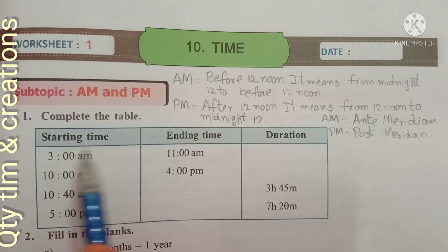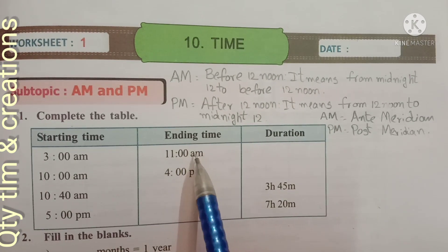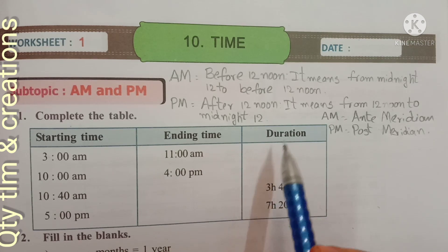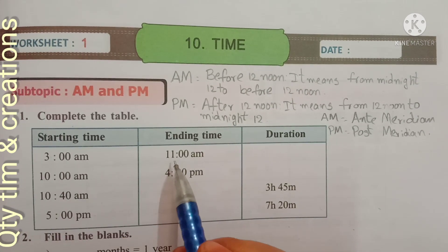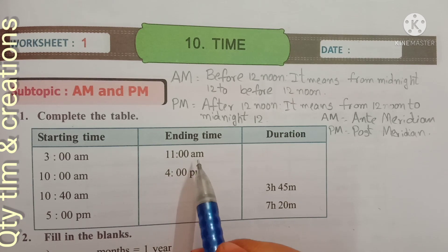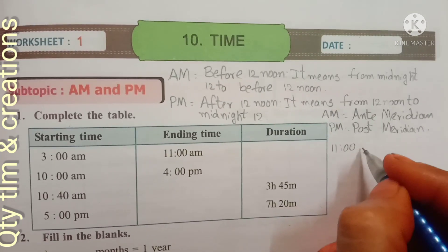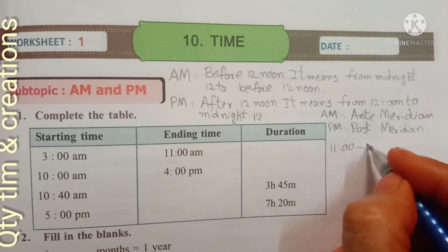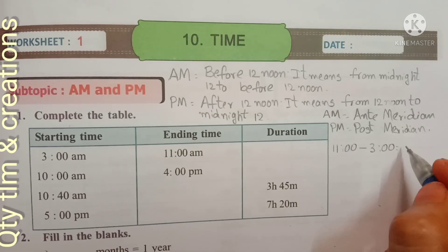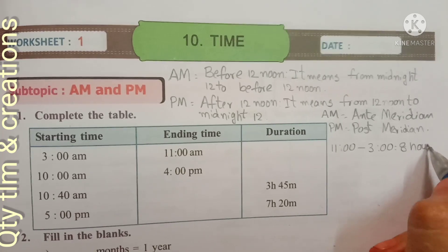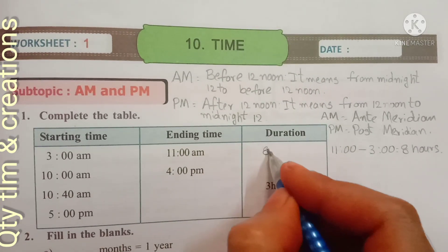Here a table is given with starting time, ending time, and we have to find the duration. Starting time is 3 AM and ending time is 11 AM. So 11 minus 3 hours equals 8 hours. The duration is 8 hours.